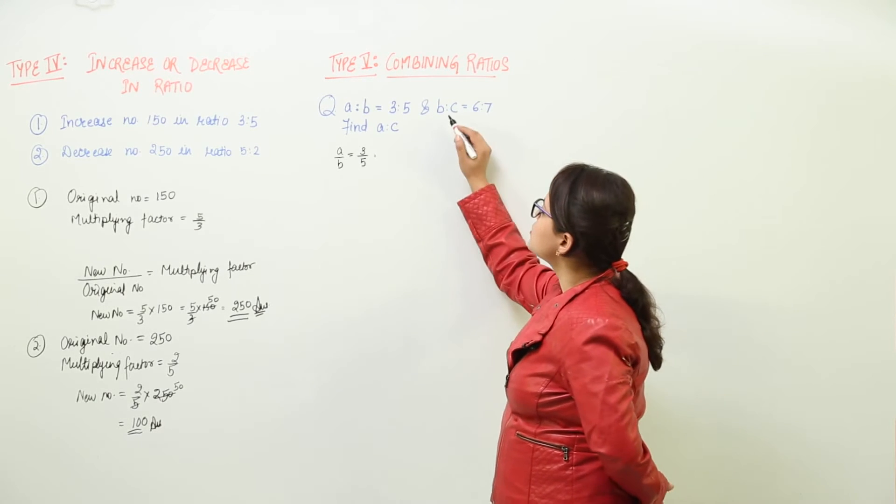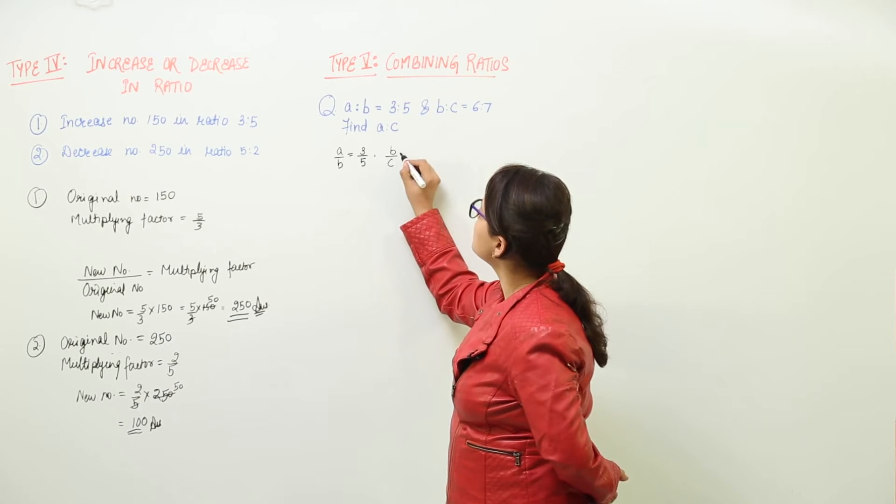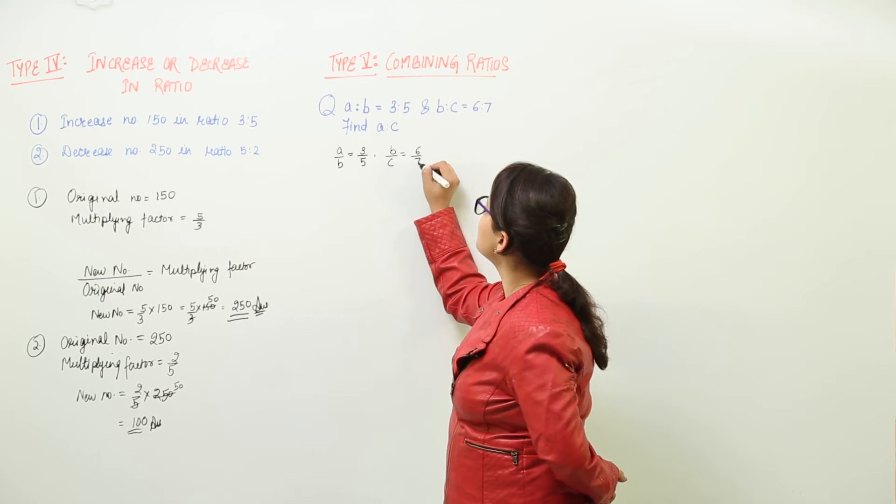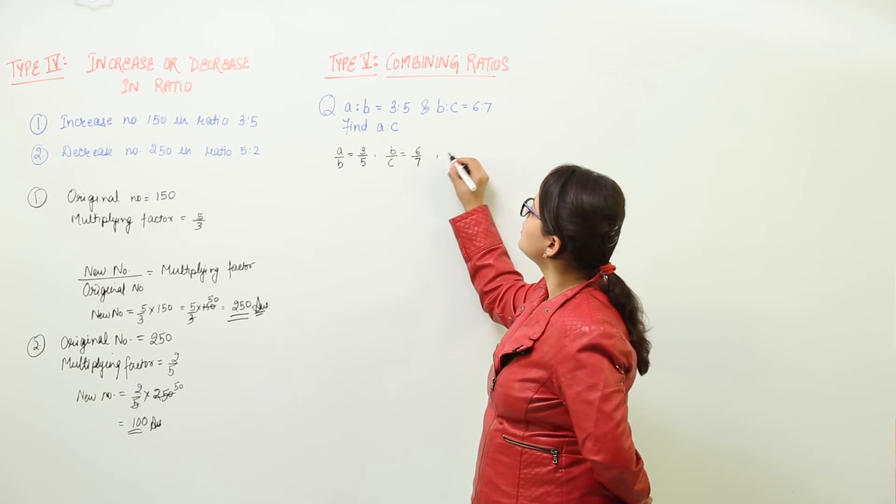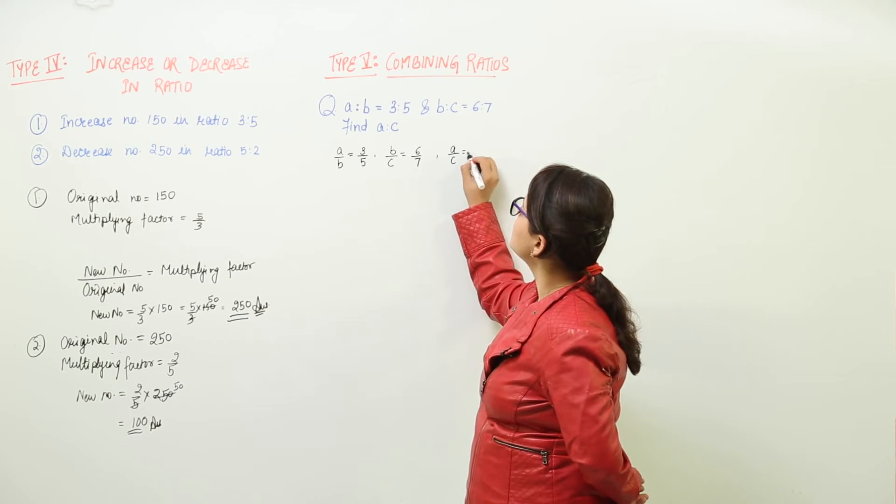Next is the ratio of B to C. We can write that as B upon C equal to 6 upon 7. Now we have to find out the ratio A upon C.